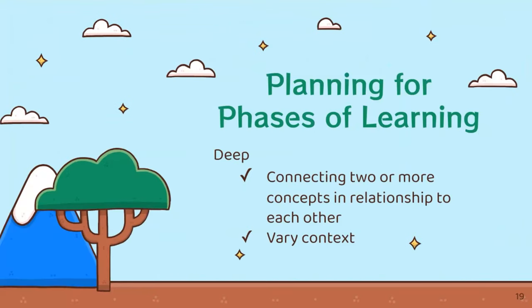Now we're going to jump to the deep phase of learning. This is where you can think of case studies, different texts, different experiments, where you're connecting two or more concepts together. Using a baking analogy: the surface level is where you're looking in the cupboard to see what ingredients you have and going to the grocery store to buy what you don't have. In the deep phase, we're going to take our ingredients and actually do the thing — we're going to bake the cookies.